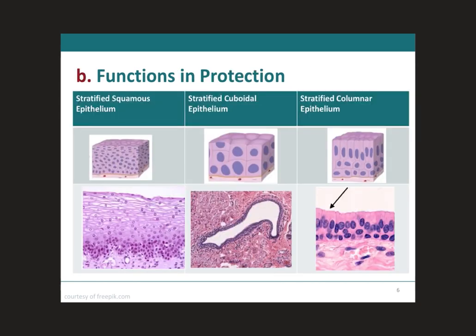To be able to protect, it would make sense that you would need a stratified epithelium. Therefore, all stratified epithelium will function as protection. Here we have the stratified squamous epithelium. You can see how on top you're going to have flat cells. It is true that the first cell layer down here has cuboidal cells, but remember when classifying the type of epithelium, we look at the last cell layer. Because these cells are flat, they're classified as squamous and more than one cell layer, so stratified squamous epithelium.